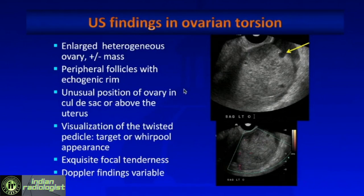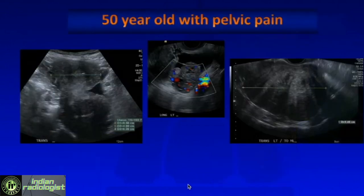Think about torsion if the position of the ovary is unusual — either in the cul-de-sac or flipped above the uterus. In these cases, look for the twisted pedicle, which you have to search for, and which will appear as a target or whirlpool appearance. Oftentimes the patient will have exquisite focal tenderness over the torsed ovary. We'll talk about the Doppler signs a little bit later, but unlike the testicle, the Doppler signs in ovarian torsion can be variable. The grayscale is really the most important finding.